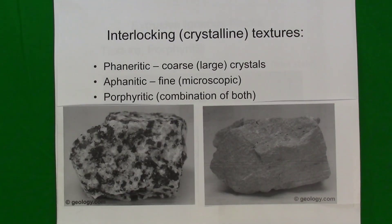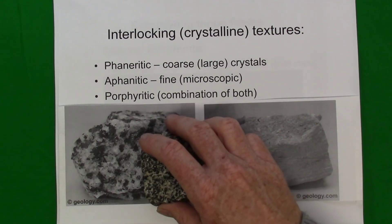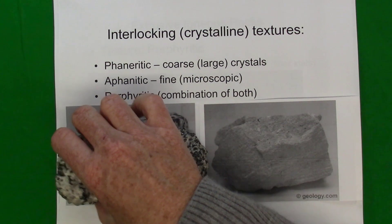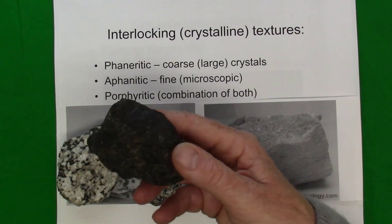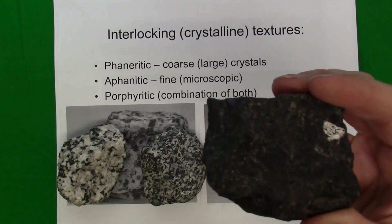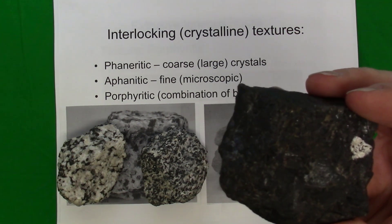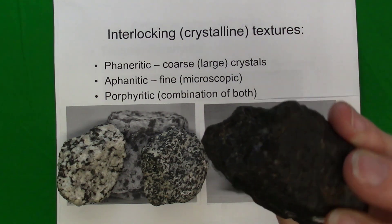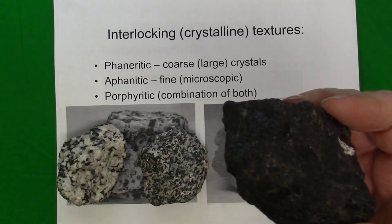There are different terms used to describe the size of the minerals. Phaneritic is a term that refers to very large, visible mineral crystals. Even if all the minerals in a rock are about the same color, we can tell that the minerals are large and visible to the naked eye because we can see the cleavage faces and the glassy luster of the silicate minerals.